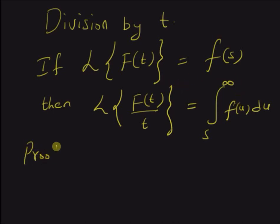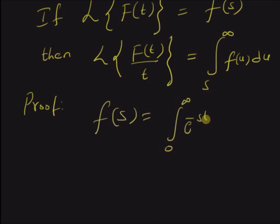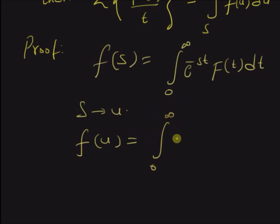Let us look at the proof. For this theorem, we are going to use F of s is equal to the integral from 0 to infinity of e to the power minus s t times f of t dt. We are going to use the definition of Laplace transform, where the LHS will be F of s and the RHS will be the integral form. Now, we replace the parameter s with u, then we have F of u is equal to the integral from 0 to infinity of e to the power minus u t times f of t dt.